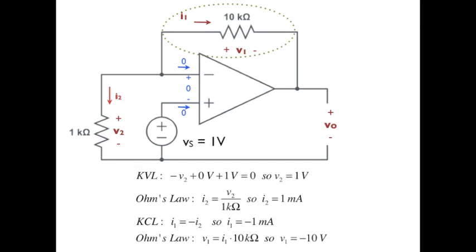Now that we've got the current through the 10K ohm resistor, we can get the voltage from Ohm's law, V1 is equal to I1 times 10K, or minus 10 volts.